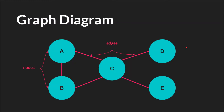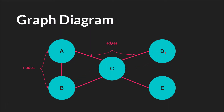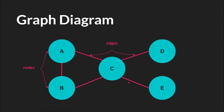A simple diagram of a graph would be some nodes — here we have A, B, C, D, E — these are nodes or vertices. And then we have our edges, the connections. You'll see that A is connected to C and B; C is connected to all four; D is only connected to C; and E is only connected to C.